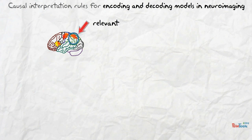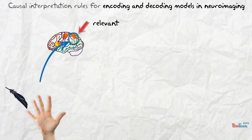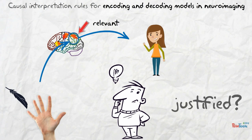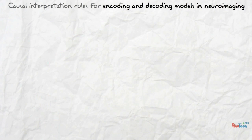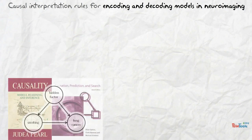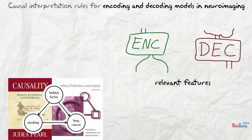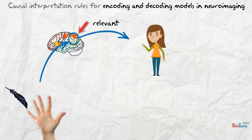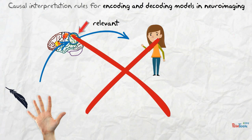It is tempting to conclude that these relevant features are affected by certain stimuli or are causing a certain response. This kind of causal insight might help understand the human brain and how it works. But are such conclusions justified and valid? Which causal statements are warranted and which ones are not supported by empirical evidence? To tackle this question, we rely on a sound framework of causality and relate the notion of relevance in encoding or decoding models to well-defined statistical properties, namely marginal and conditional dependence. This allows us to rigorously argue that many causal conclusions that are commonly drawn and seem intuitive are not true in general.